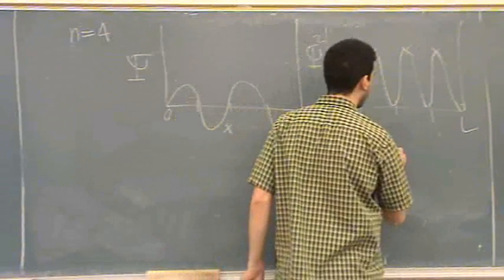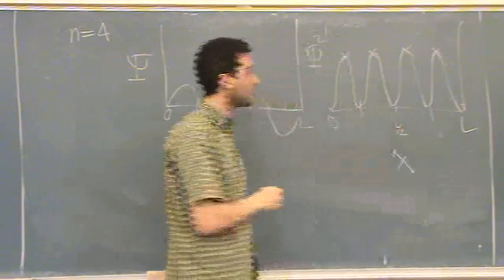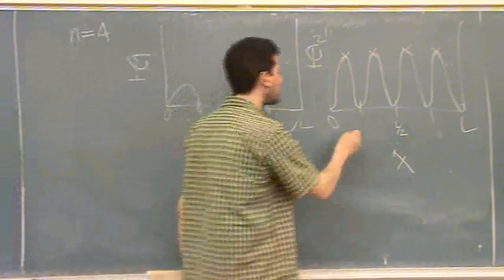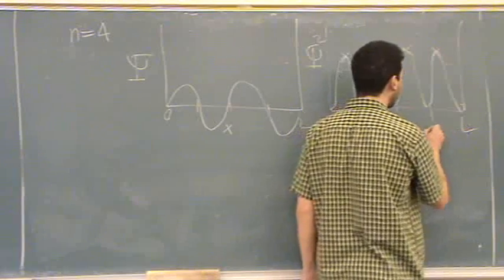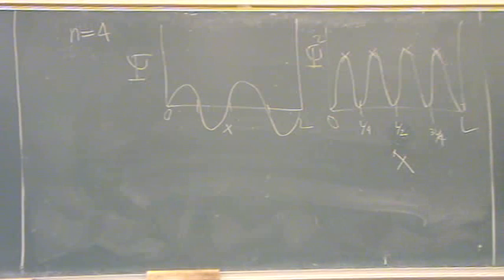So let's start with these points here. This is L over 2, halfway right in the middle. Half of L over 2 is going to be L over 4. And halfway between L over 2 and L is 3L over 4. Is that part okay? I'm just getting where the nodes are.